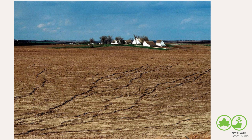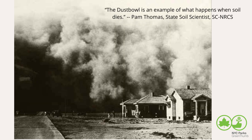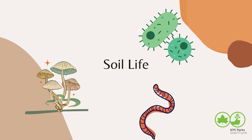One thing we can do is protect the soil from damage by wind or water erosion by making sure any bare areas are planted out or covered with mulch. We can also protect the microbial life in the soil. As Pam Thomas says, the Dust Bowl is an example of what happens when soil life dies.